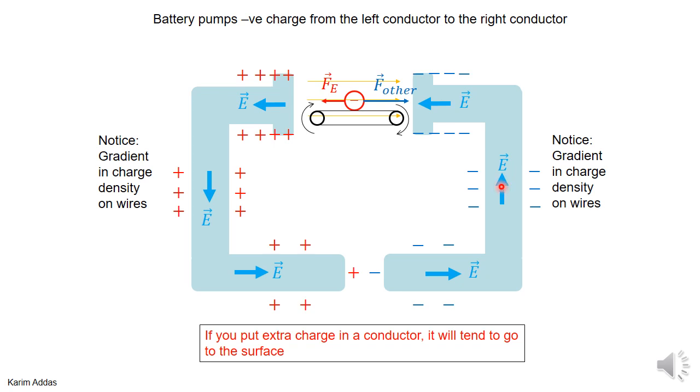The reason you have an electric field inside the wire is because of this gradient in charge density on the surface of the wires — and the same thing happens on the other side.